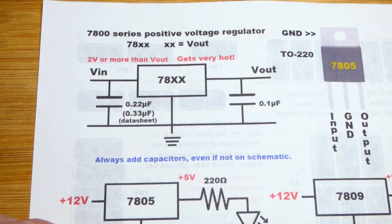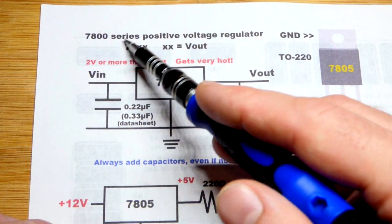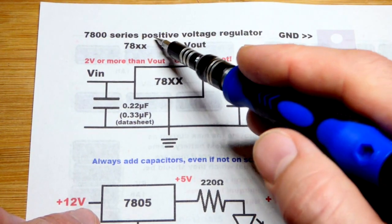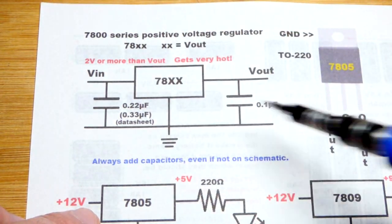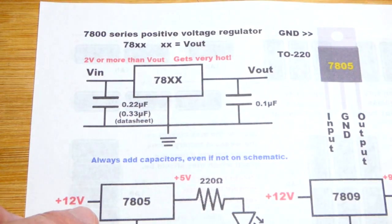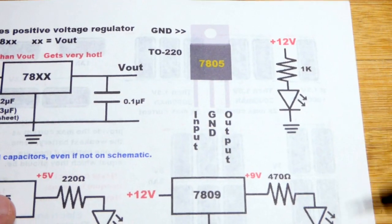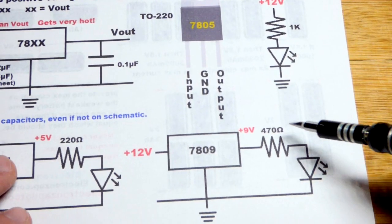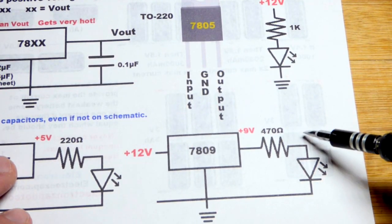So what we're going to do is use a couple 7800 series positive voltage regulators to protect them. This is a positive voltage regulator, the 7800 series. There's also a 7900 series where the voltage, instead of being positive in relationship to ground, is when you're working with voltages that are negative in relationship to ground.